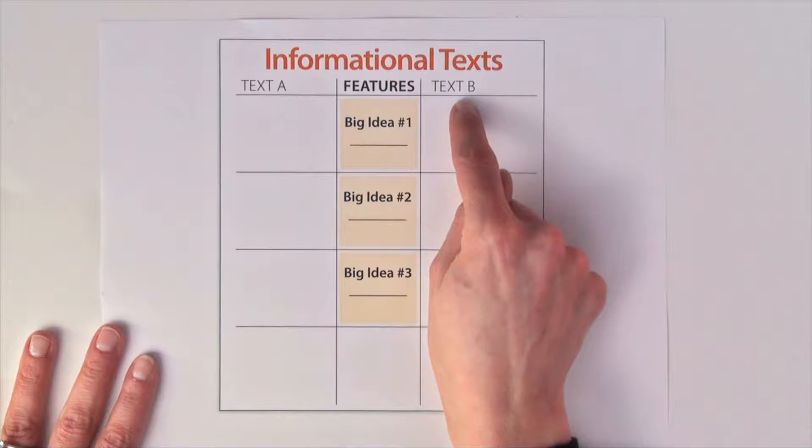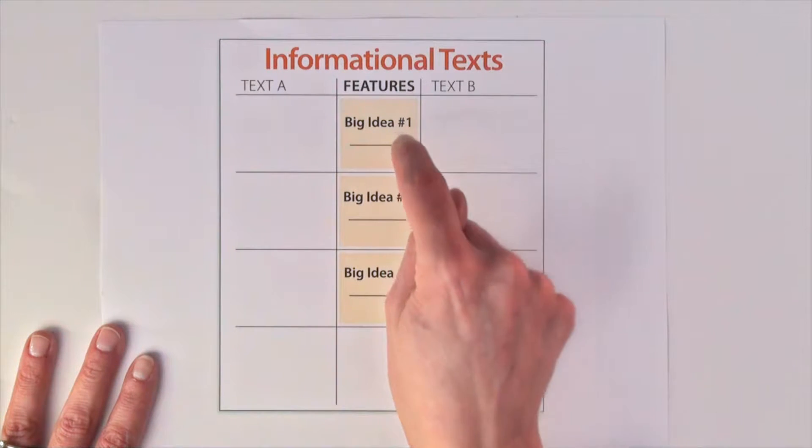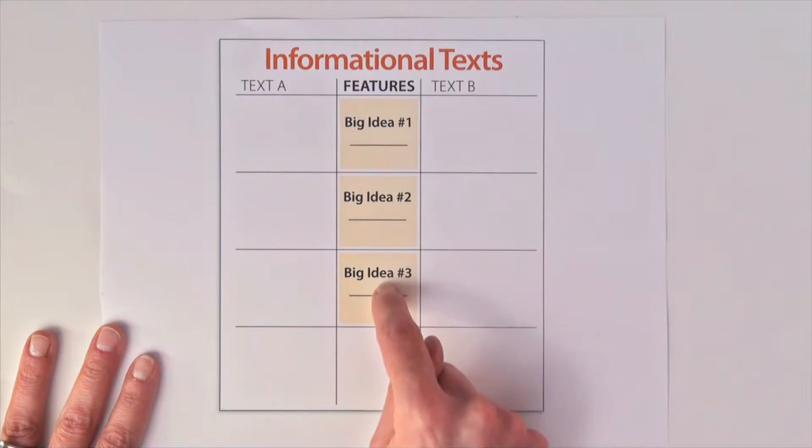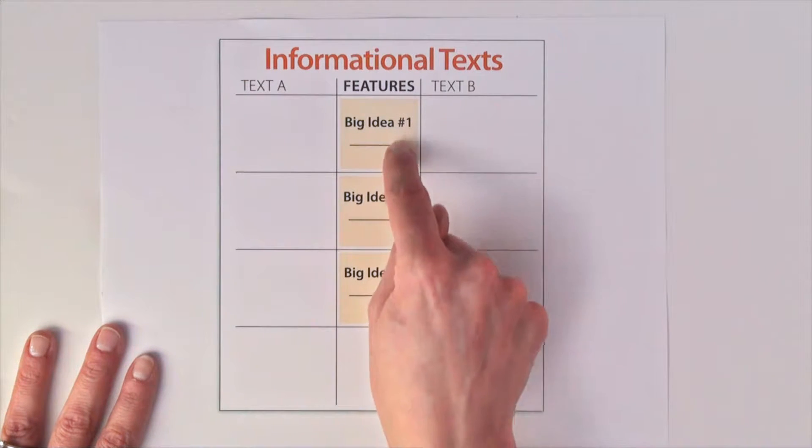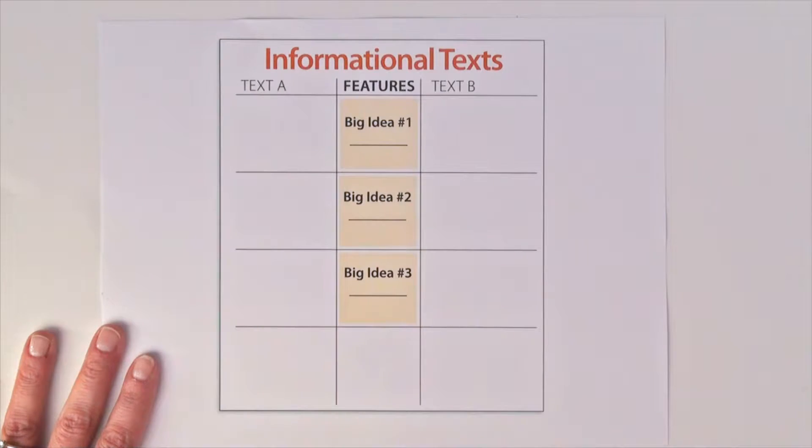Then they read Text B and they're listening for those same big ideas. Remember, we're looking for comparison points — something that both texts will address. When reading Text B and any of those big ideas come up there as well, the students are going to make specific notes in that far right-hand column. We do want them to realize that the same big ideas will come up, but maybe not in the same order, so they have to be prepared to jump around that T-chart.